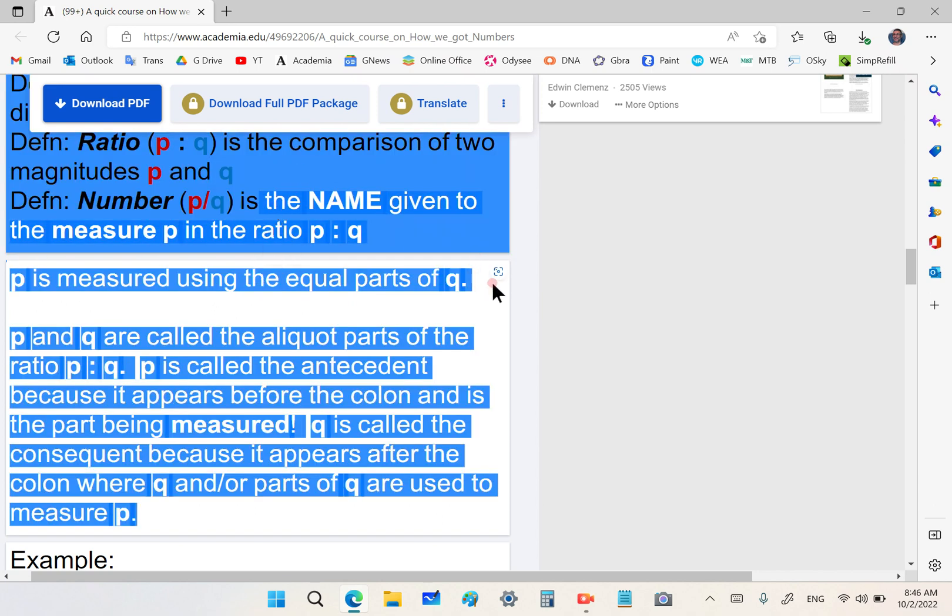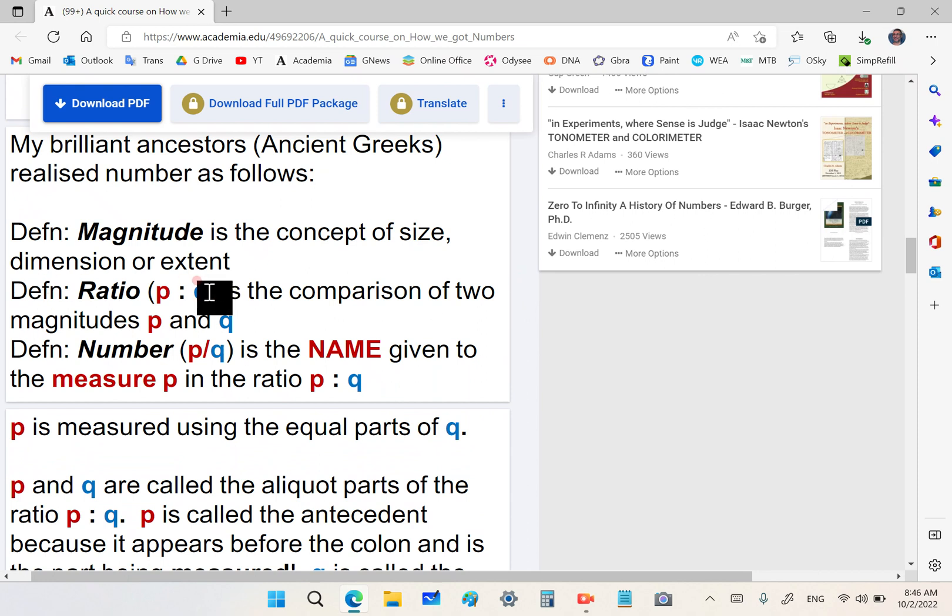Number is a name that is given to the measure. Before we can call p the measure of p colon q by name, meaning it is a number, both p and q must have a common measure. Do you understand that? What does a common measure mean? It means a common divisor.